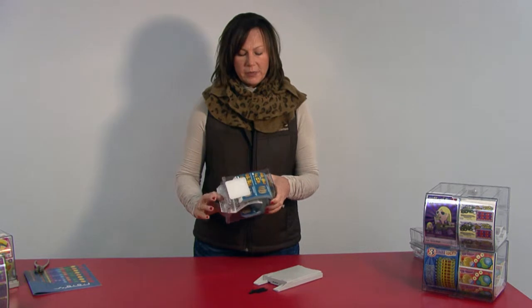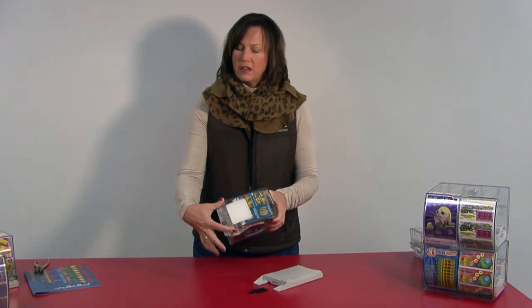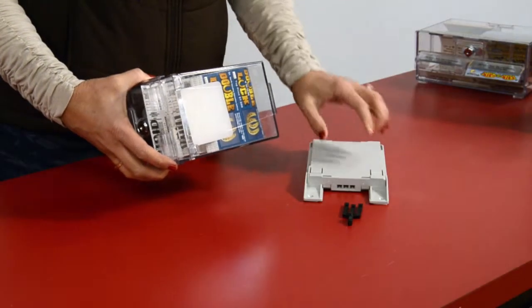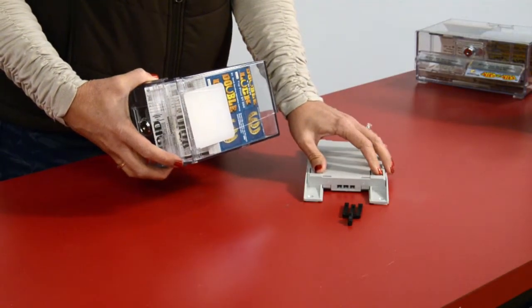Your single dispenser has a hook and two feet on the bottom side of the dispenser that will align with the hook and the feet in the single lockable slide mount.